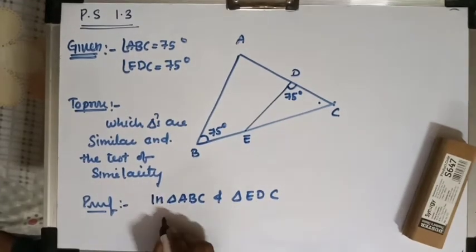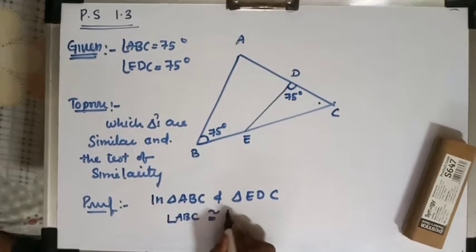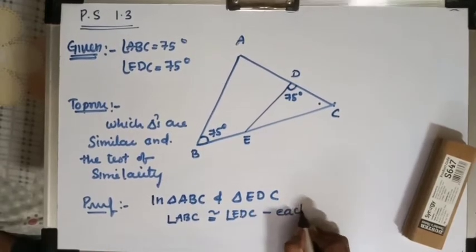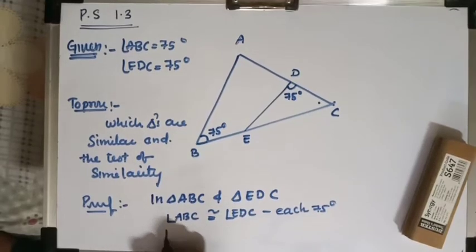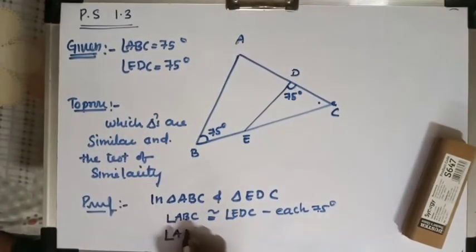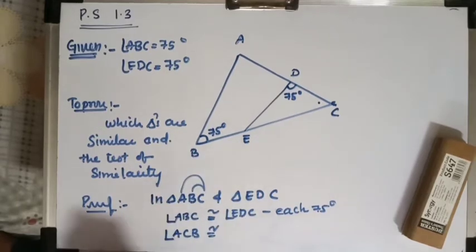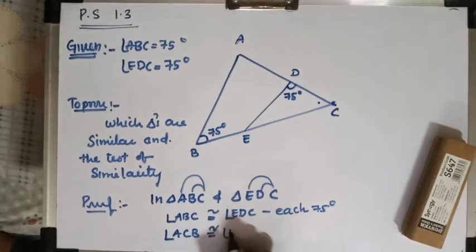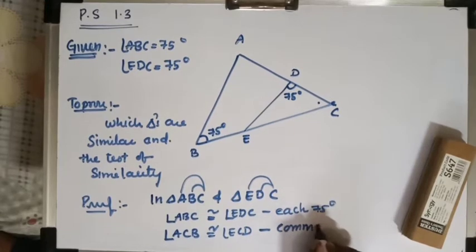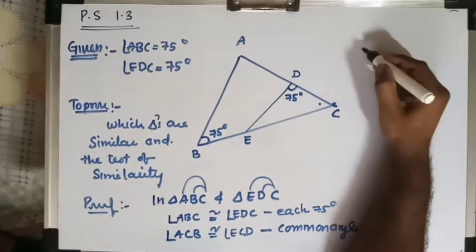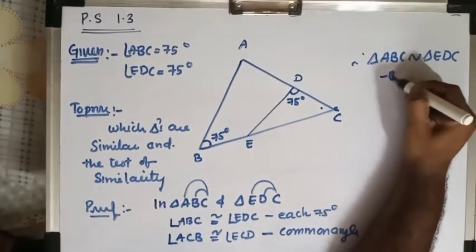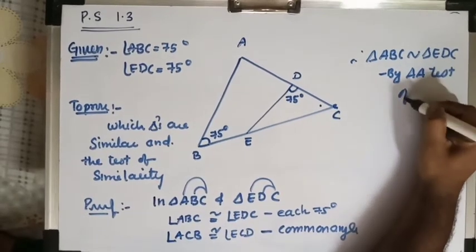In triangle ABC and triangle EDC: angle ABC is congruent to angle EDC (given, both 75 degrees). Angle ACB is congruent to angle ECD — this is the common angle. Therefore, triangle ABC is similar to triangle EDC by the AA test of similarity.